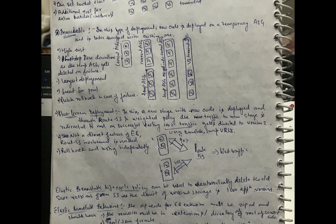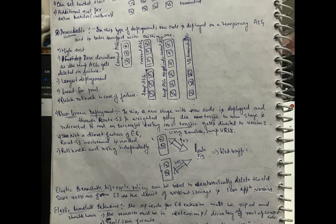The last deployment type is 'Blue/Green.' There is no direct way of doing this in Elastic Beanstalk. We create a new environment separately, and then using Route 53's weighted routing policy, we divert a certain portion of traffic — say about 10% — to version two hosted on the new environment, while the rest goes to version one. Upon successful testing, we can redirect 100% of traffic using Elastic Beanstalk's URL swapping feature. This is costly but allows very quick rollback, and testing can be done independently on the new version.